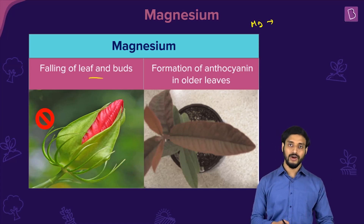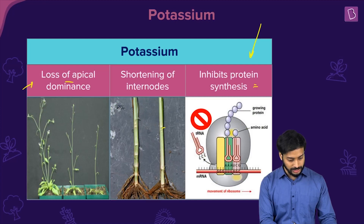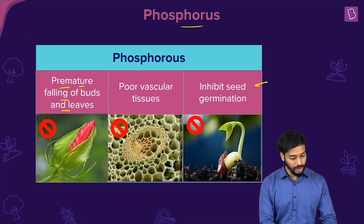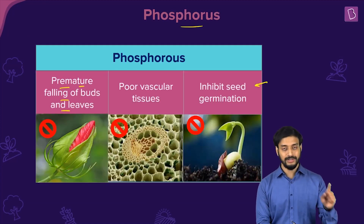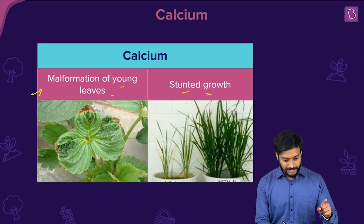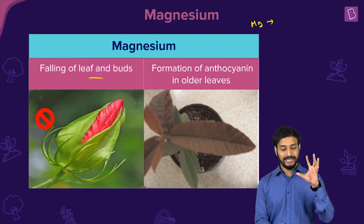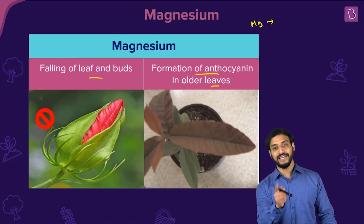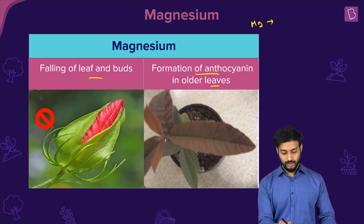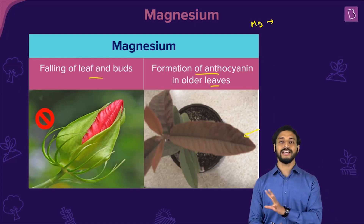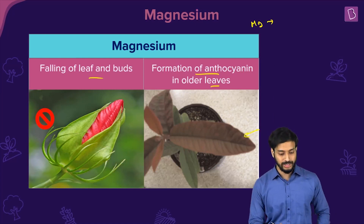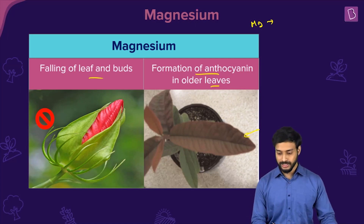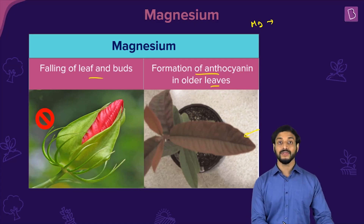For magnesium deficiency, the symptoms are premature falling of leaves and buds — similar to phosphorus — and formation of anthocyanin, causing browning of older leaves. This pigment formation occurs when magnesium is not present in proper amounts.